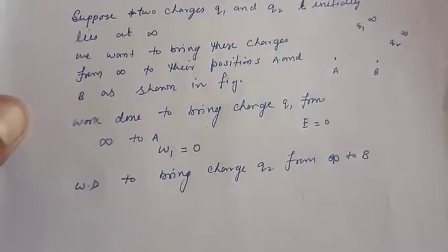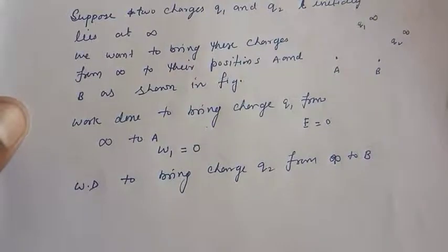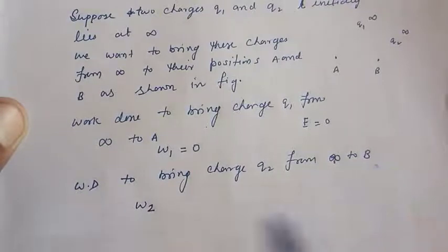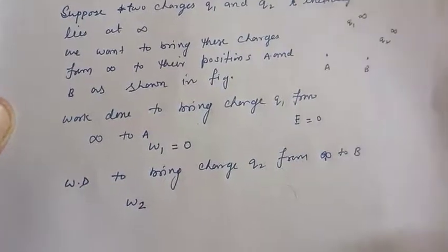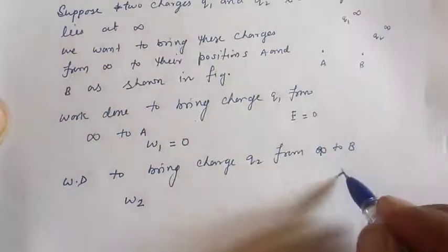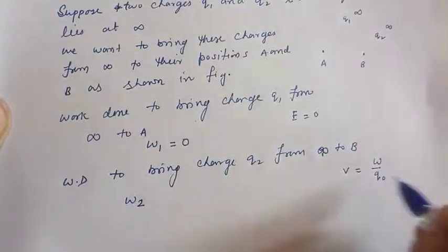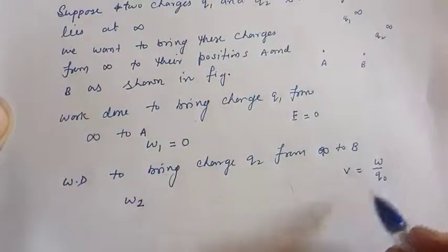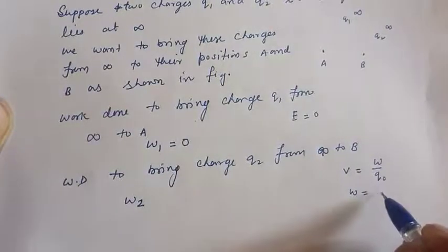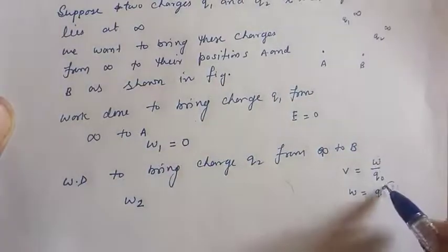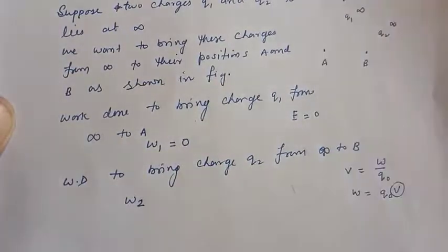So now work done to bring charge q2 from infinity to b, let it be w2. You know we have studied potential and electric potential, work done per unit test charge. So from this definition, you can find the work done. Work done is equal to q0 times v, where v is the potential.